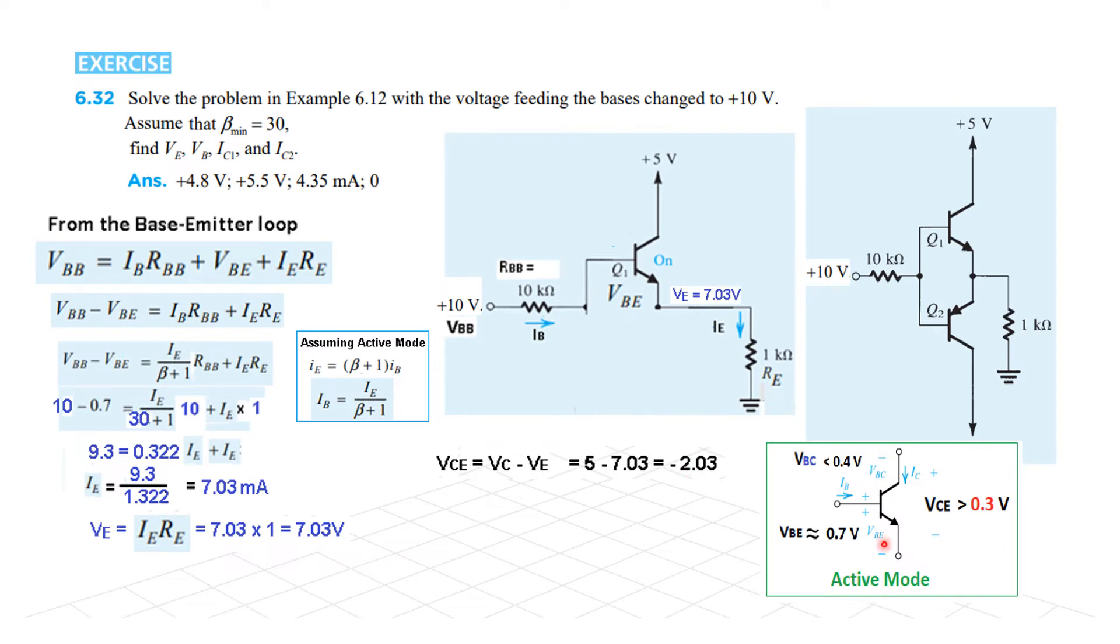Now let's see this. We have discussed earlier also that for a transistor to be in active mode, VCE has to be greater than 0.3 volt. Now in our case, VCE is negative. Therefore our assumption that the transistor is in active region is wrong, and therefore all these calculations that we have done are wrong.